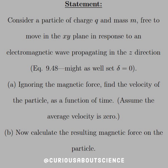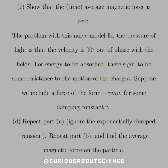Part B: calculate the resulting magnetic force on the particle. Part C: show that the time average magnetic force is zero. The problem with the naive model for the pressure of light is that the velocity is 90 degrees out of phase with the fields. For energy to be absorbed, there's got to be some resistance to the motion of the charges. Suppose we include a force of the form negative gamma mv for some damping constant gamma. Now repeat part A, ignore the exponentially damped transient, repeat part B, and find the average magnetic force on the particle.